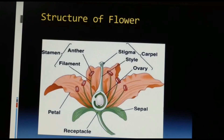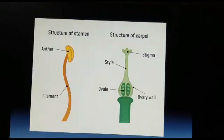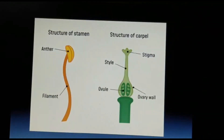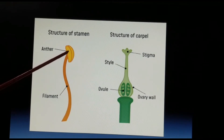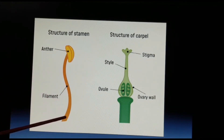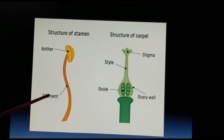Now I come to the typical structure of a carpel and a stamen, which will be still clearer for you to see here. These are the anthers which produce pollen grains, and finally this thin thread-like structure or stalk is said to be the filament.